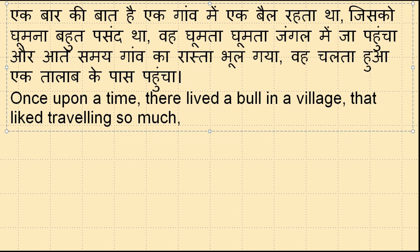Wahaan ghoomta ghoomta jangal mein ja pahuncha. Wahaan ki ingles hoti hai 'there,' lekin yahaan par hum ek bull ki baat kar rahe hain — ek animal — aur animal ke liye hum 'it' ka use karte hain. Past indefinite tense hai, to 'reached' ho jaayega — verb ki second form. He reached a forest.